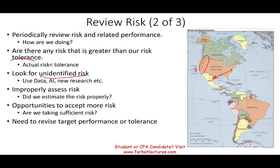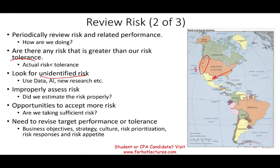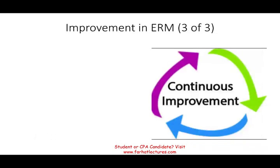You need to revise target performance or tolerance on a regular basis — by changing your business objective, business strategy, culture, risk prioritization, how you respond to risk, and your risk appetite. When you change those, they have to be approved by the board of directors. This is what reviewing risk means on a regular basis: take a look at your risk situation — are you taking enough risk, too much risk, or not enough risk? Adjust accordingly.